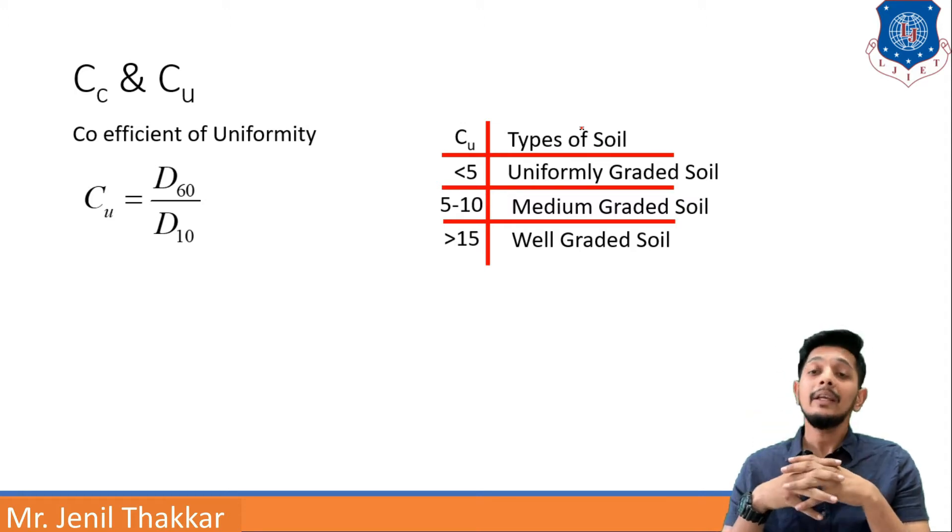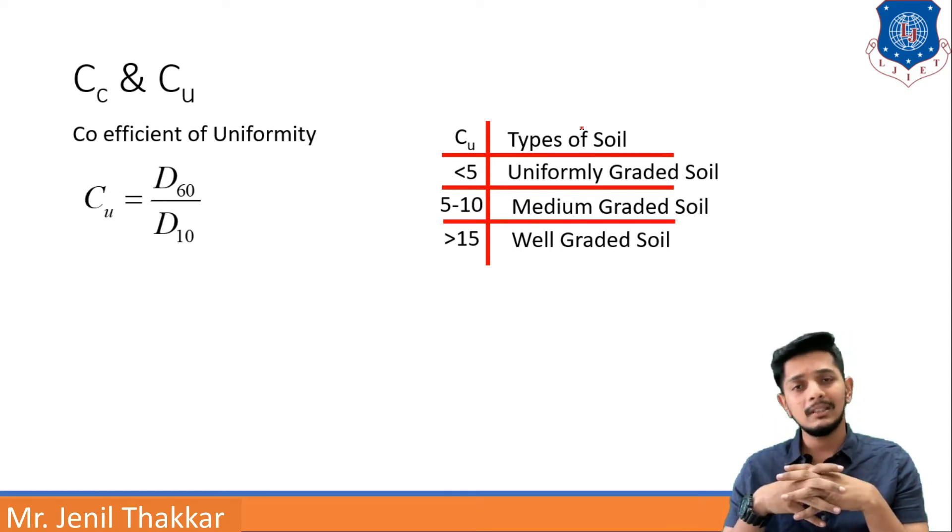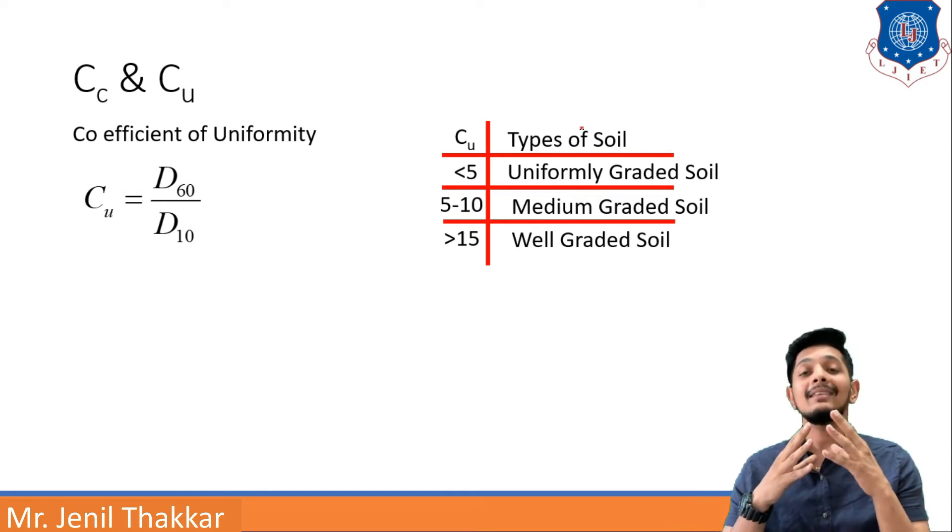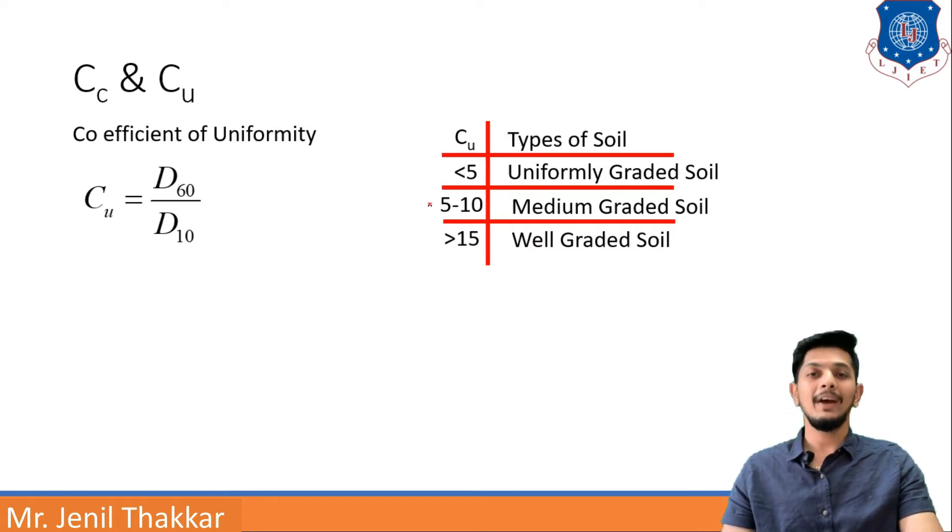Now if CU is a ratio of D60 to D10 is coming less than 5 the type of soil will be uniformly graded soil. If CU is in between 5 to 10 it will be a medium graded soil and if CU is greater than 15 it will be a well graded soil.